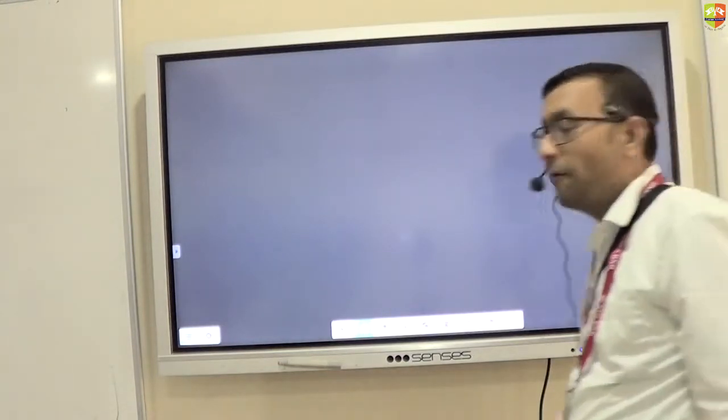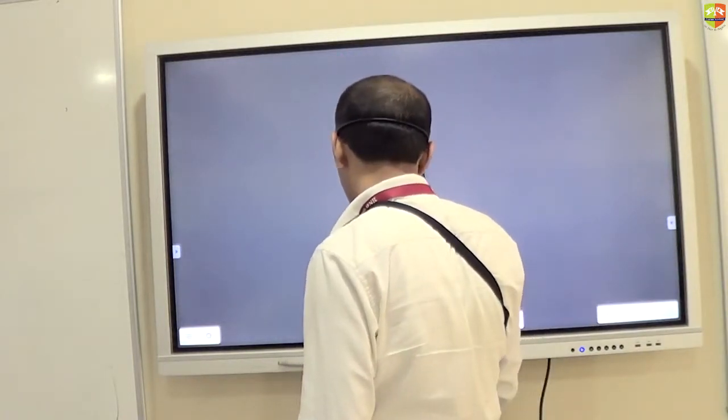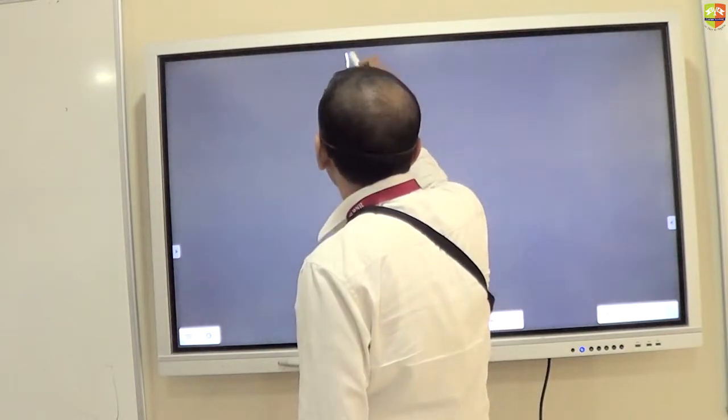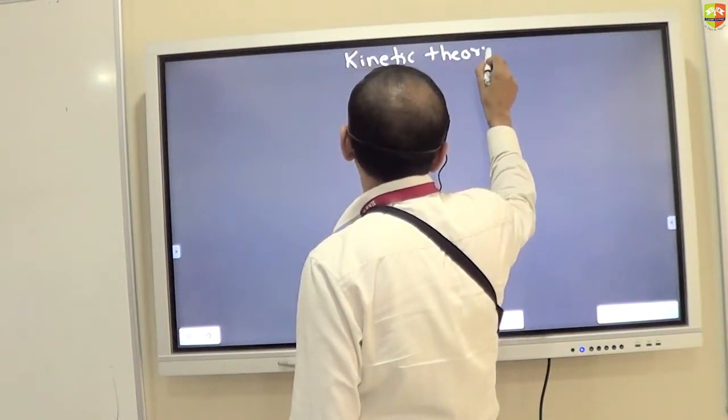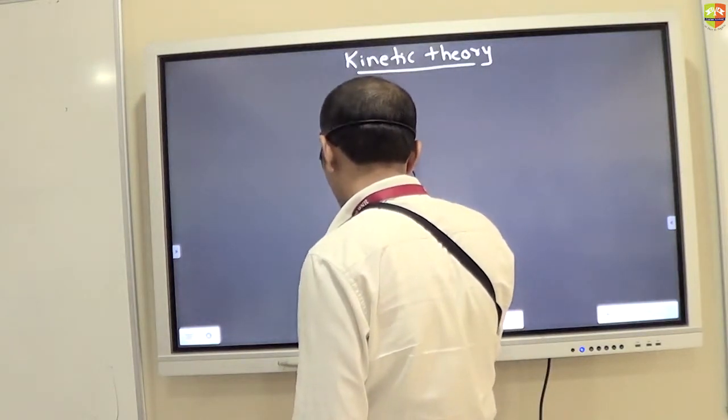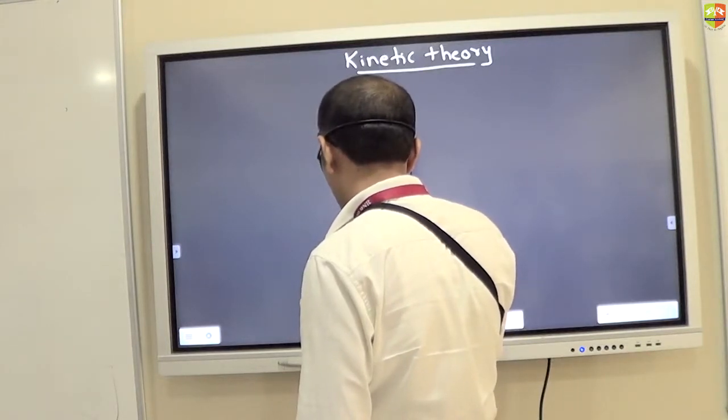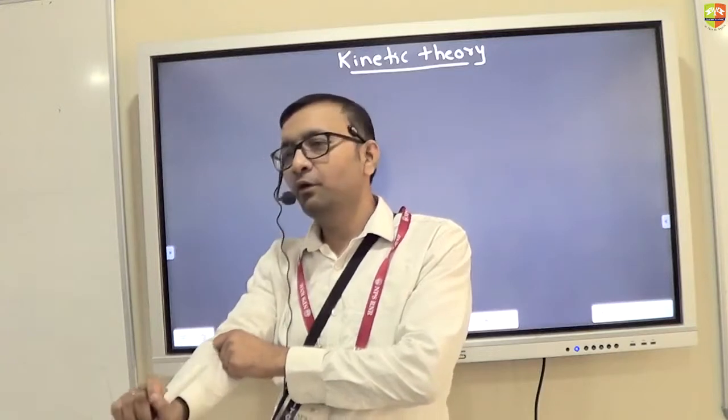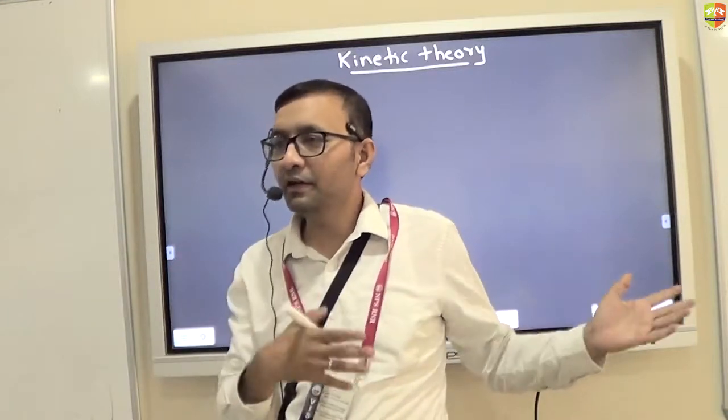So today we are going to start this chapter of kinetic theory. Write down. In this chapter we are going to again learn about properties of matter only. But properties of matter we have already learnt in the earlier chapter.